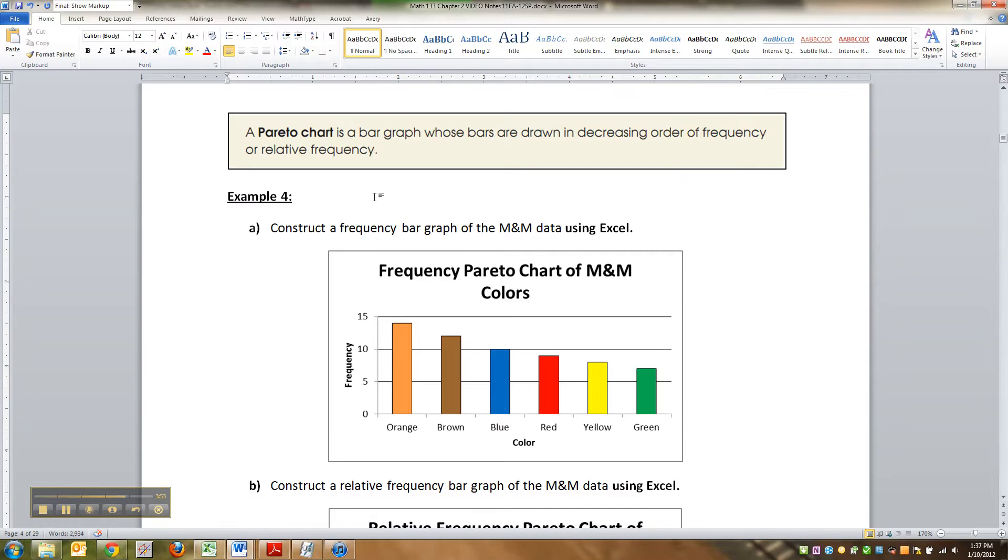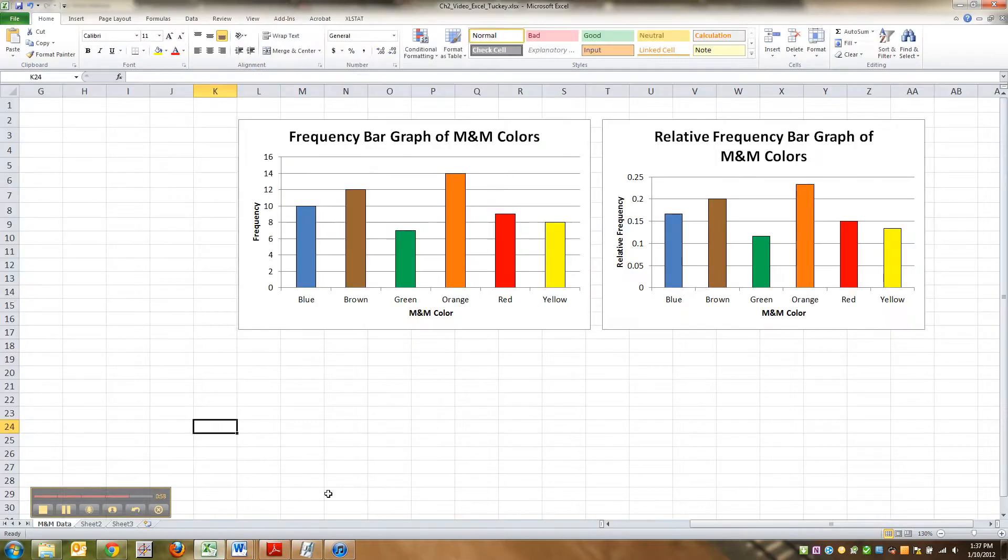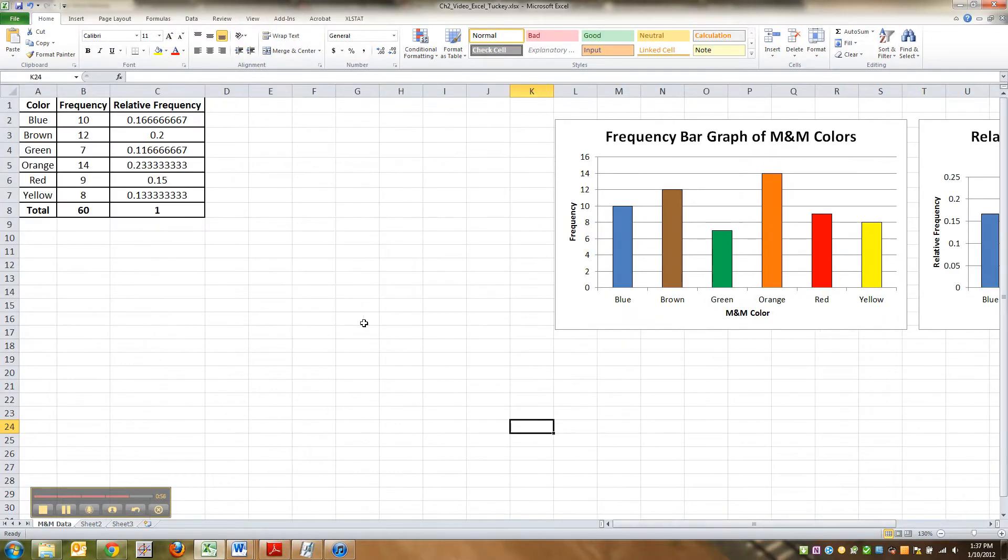Alright, now we're going to make Pareto charts. Pareto charts are bar graphs, but the bars are drawn in decreasing order. Alright, so let's go back in here. What we want to do, the easiest thing to do, I'll start in this one and finish it in the next video.